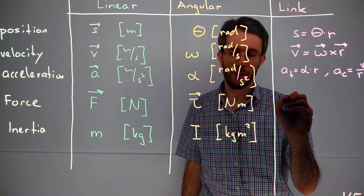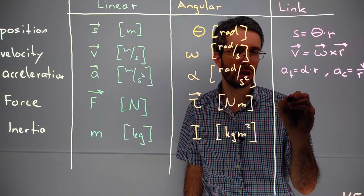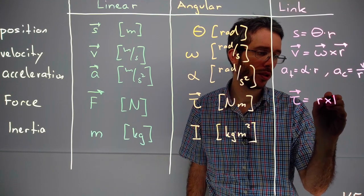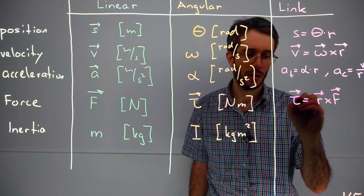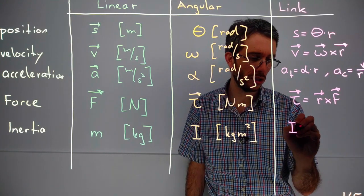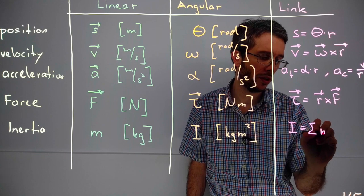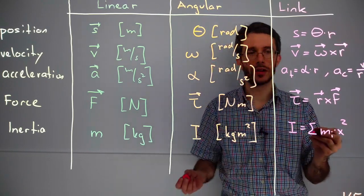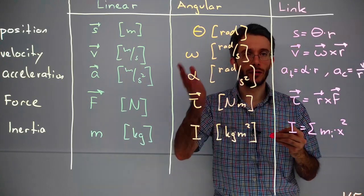Then the equivalent for force is torque, which is r cross product F. And then for the inertia, the rotational inertia is the sum of all mass particles times the distance squared from the axis of rotation. So this completes our first page.